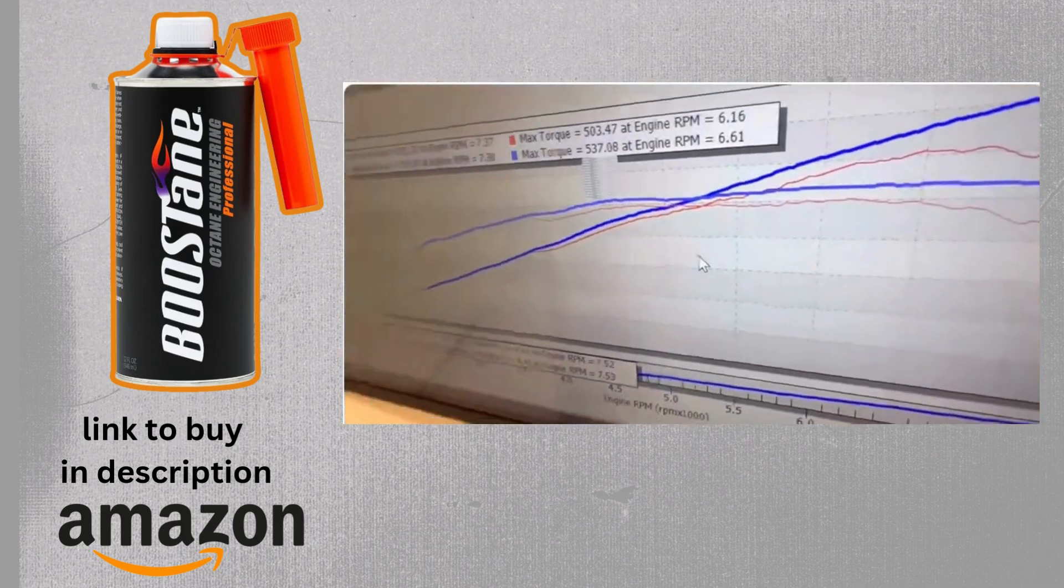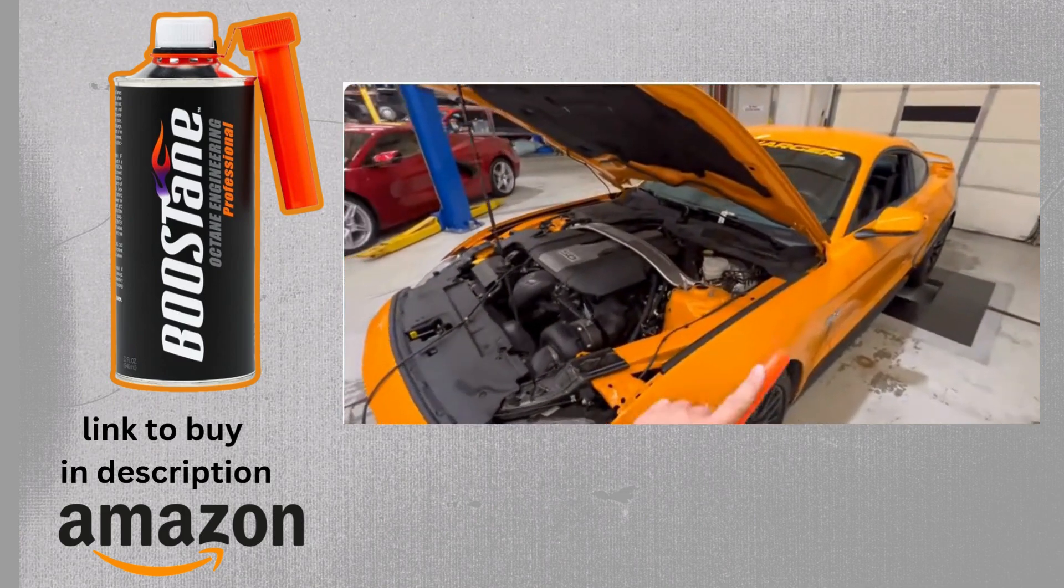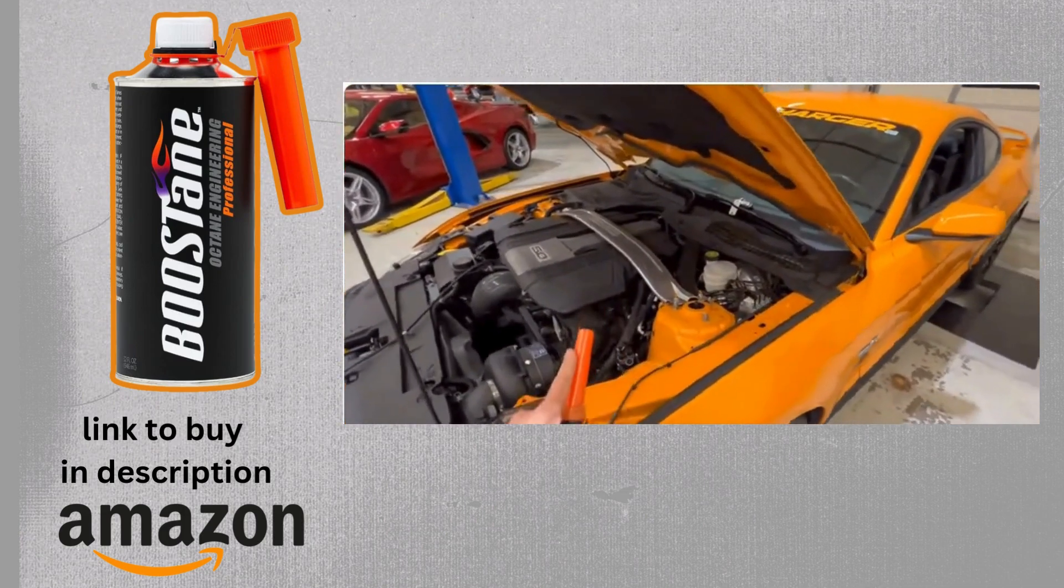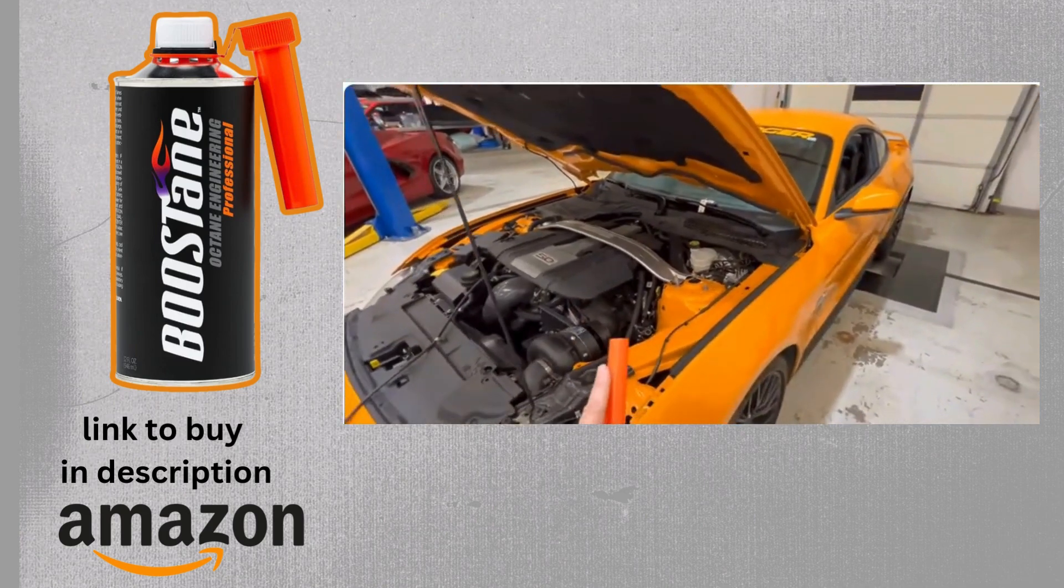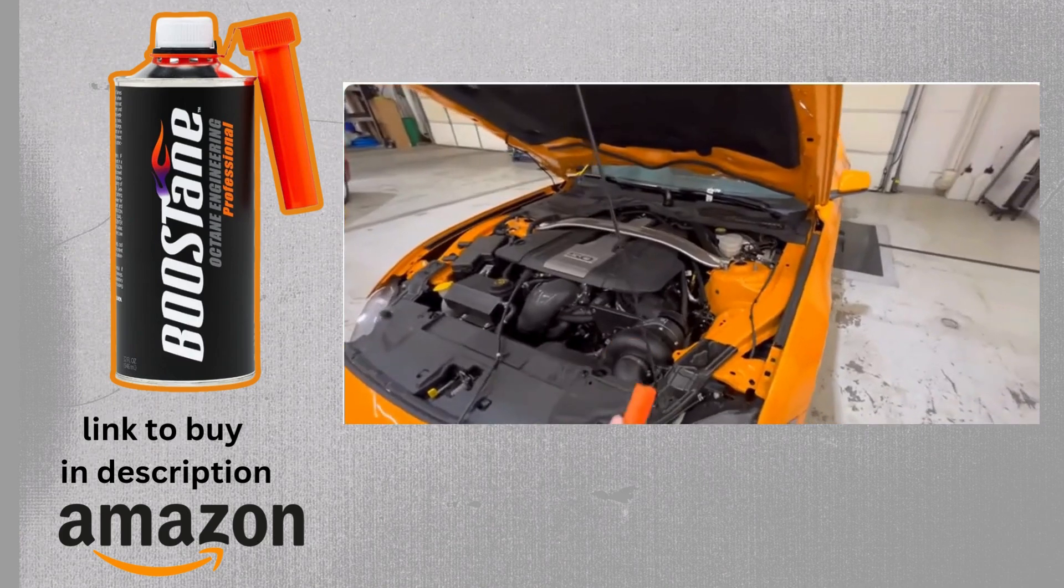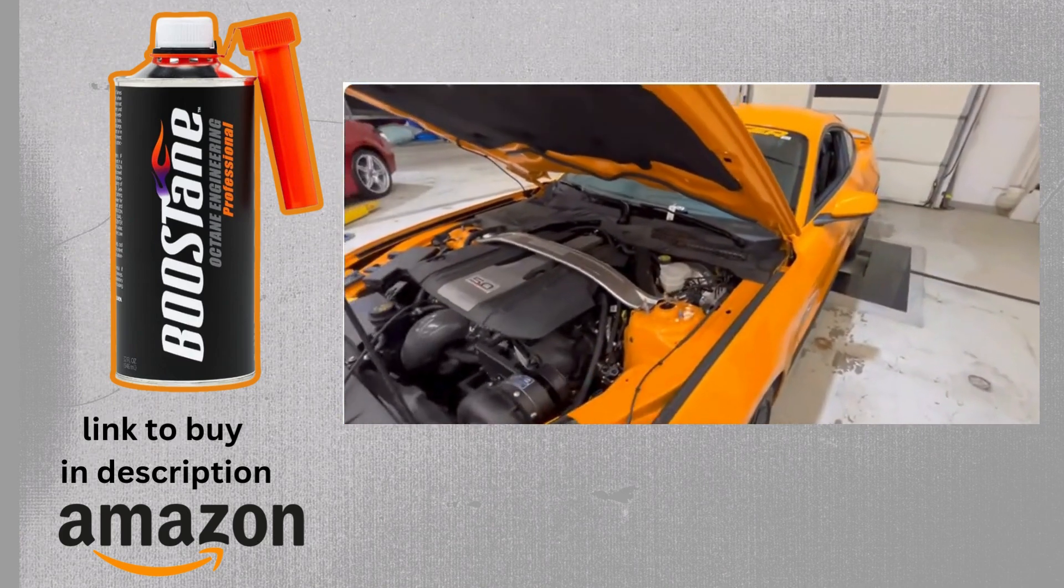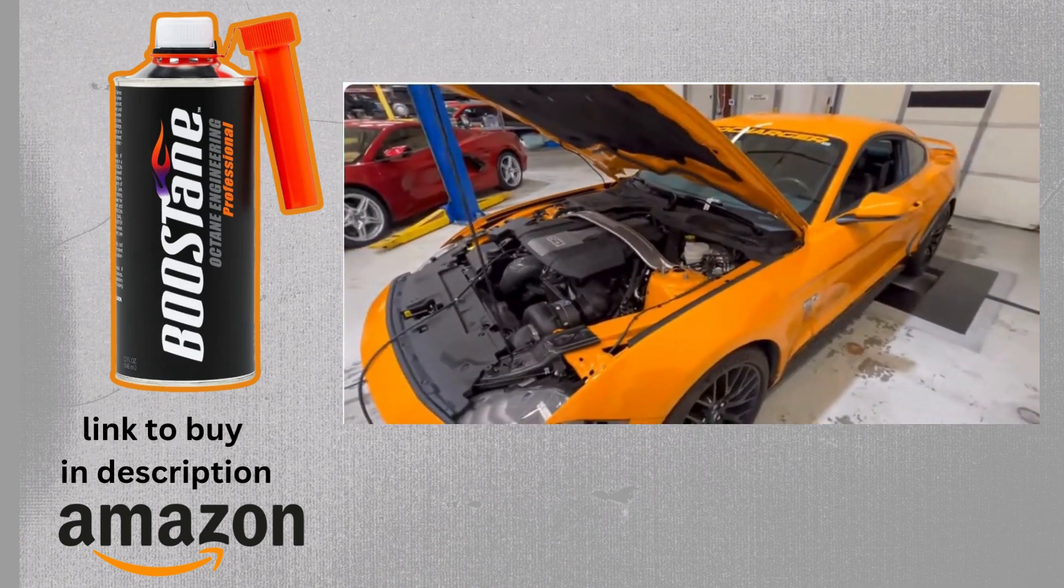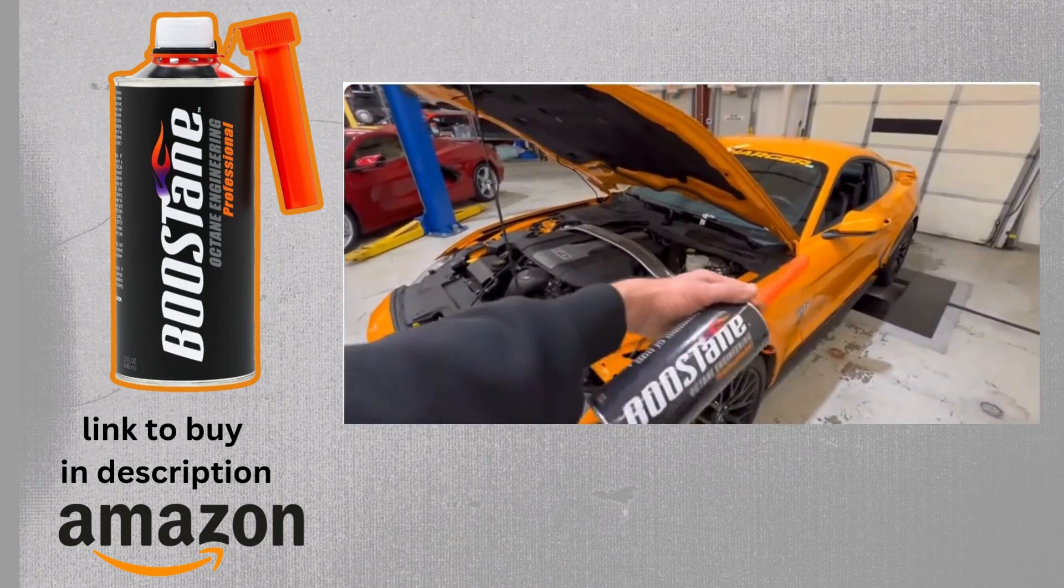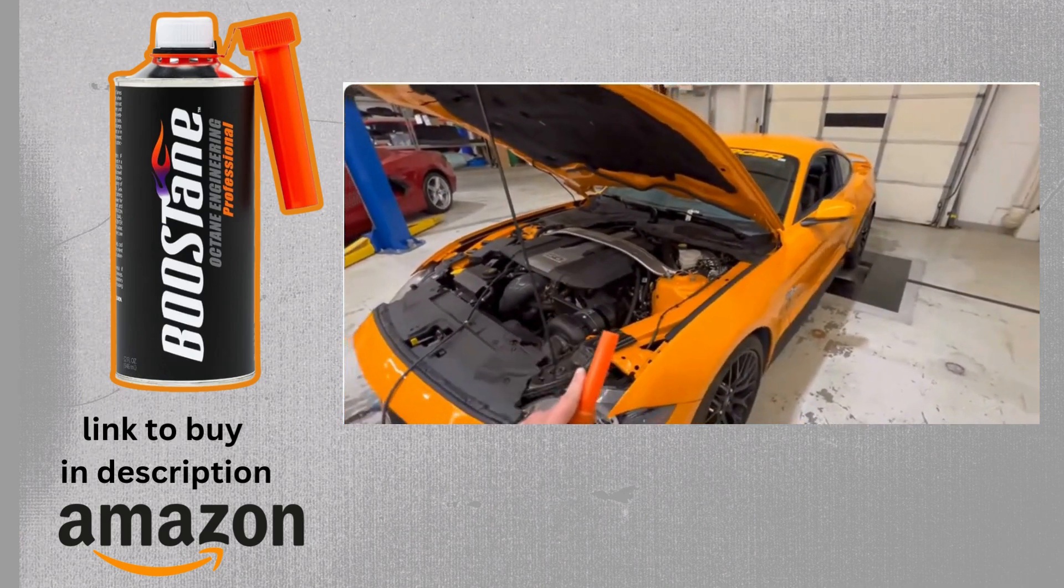But that's the beauty of these new Mustangs and the pro charger tune because it is always going to adapt to the fuel that's in the tank. Now, I wouldn't run 87. That'd probably be the end of this motor. But at least 91, we now know it makes about 621. And I know on 93, it makes about 660. And evidently with a can of this, it makes 720.